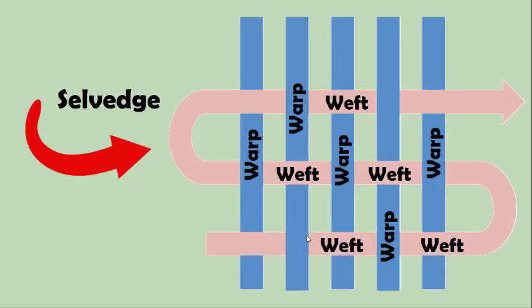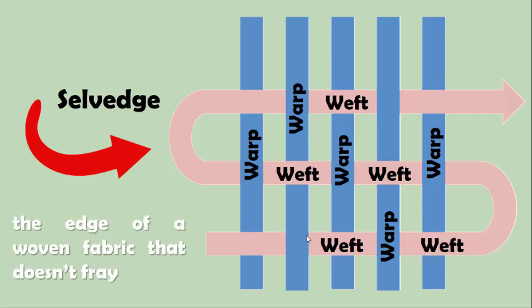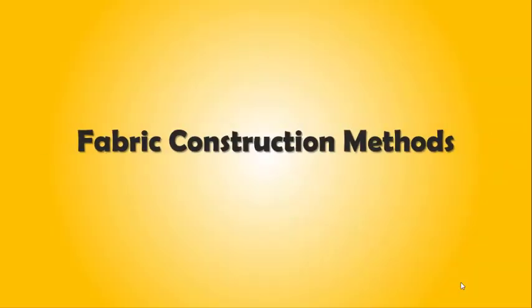Again, selvedge can be found in the edge of a woven fabric that doesn't fray. So now, going back to the methods, the first method is what we call felting.